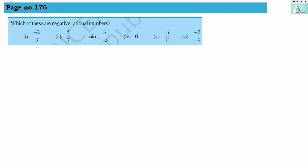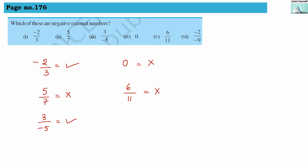Next question: which of the following are negative rational numbers? Minus 2 by 3 — yes, it is a negative rational number. 5 by 7 — it is not a negative rational number because both are positive. 3 divided by minus 5 — yes, it is a negative rational number. 0 — it is not a negative number. 6 divided by 11 — there is no negative sign, so it is a rational number but not a negative rational number.